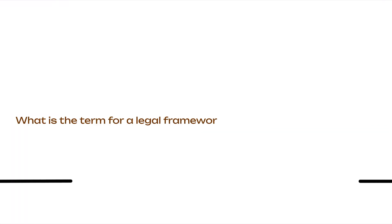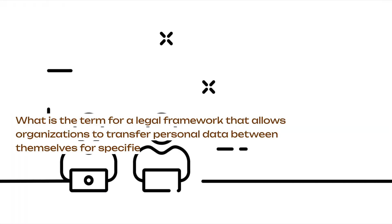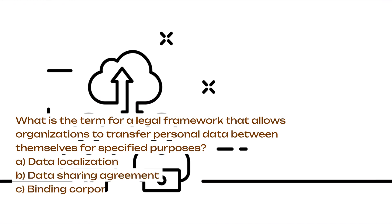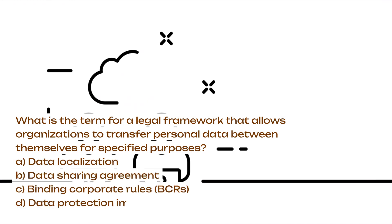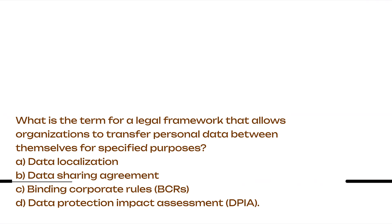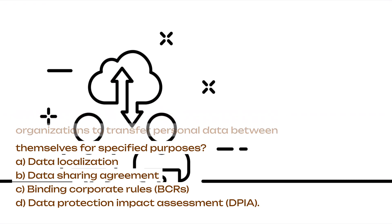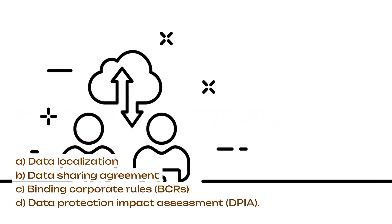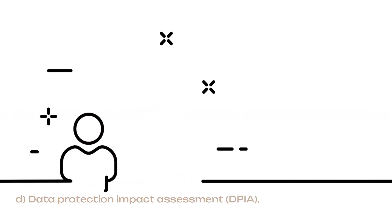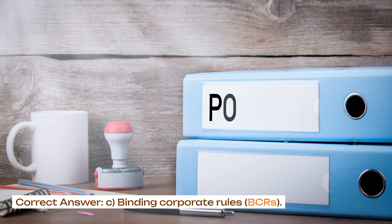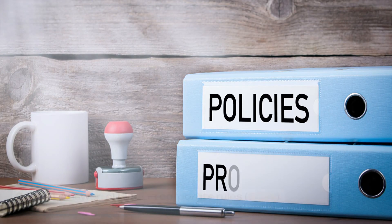What is the term for a legal framework that allows organizations to transfer personal data between themselves for specified purposes? A. Data localization. B. Data sharing agreement. C. Binding Corporate Rules (BCRs). D. Data Protection Impact Assessment (DPIA). Correct answer: C. Binding Corporate Rules (BCRs).